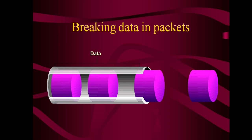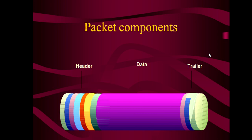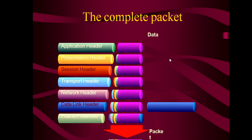When data moves, a stream of data is divided into different packets. What is exactly a packet and what does it contain? The components of a packet are: data, header, and trailer. So a packet contains data, a header, and a trailer.